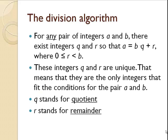For any pair of integers a and b, there are unique integers q and r, which stand for quotient and remainder, so that a equals b times q plus r. r is less than b, but greater than or equal to zero.